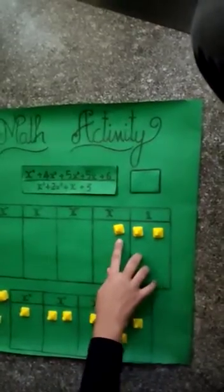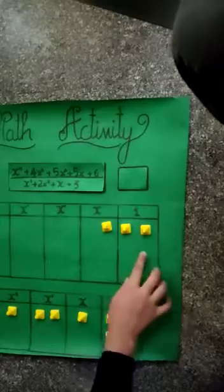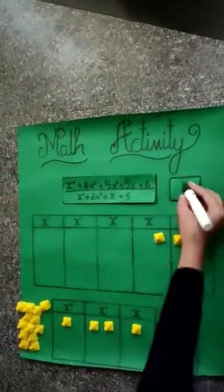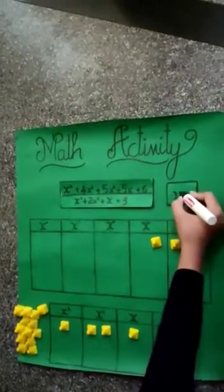As you can see, we have left out with x + 2 as the remainder. So, the answer is...